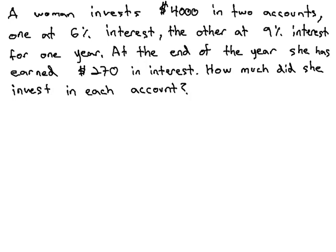In this video, we're going to solve an interest problem that has to deal with simple interest over one year. Here, a woman invests $4,000 in two accounts. One's at 6% interest, the other at 9% for one year. At the end of the year, she has earned $270 in simple interest. How much has she invested in each account?